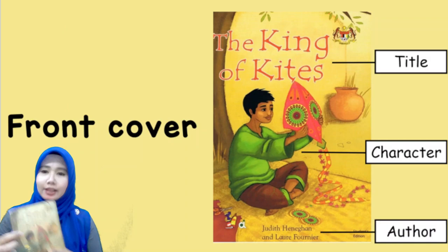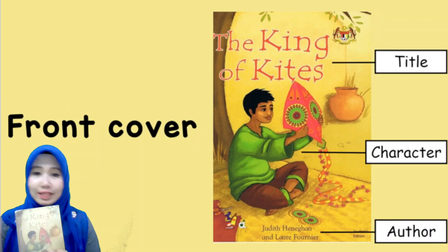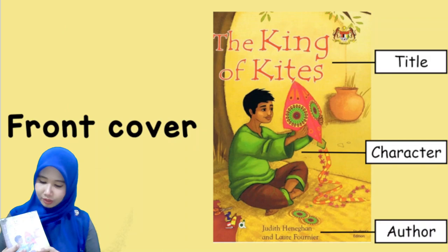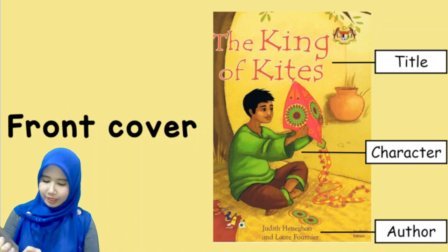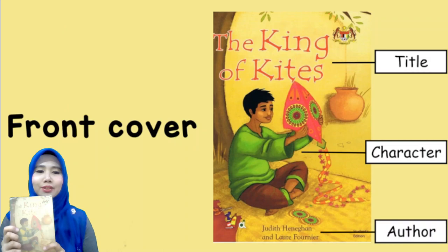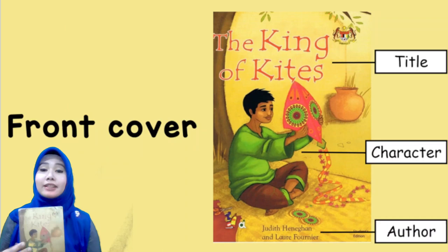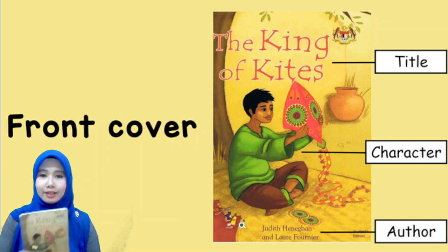The next one is the character. Character means the people who is in the story. It is illustrated at the front page, the cover page. The third one is the author. The author of the book are Judith Hannigan and Law Fonier. So this is the front cover. Front cover means muka surat ataupun kulit hadapan.